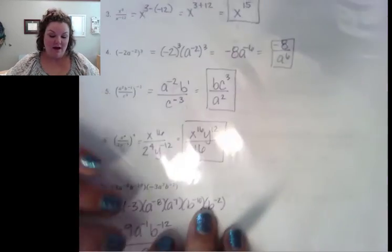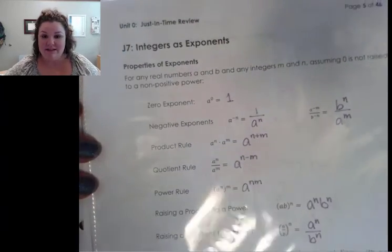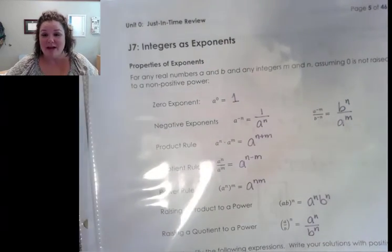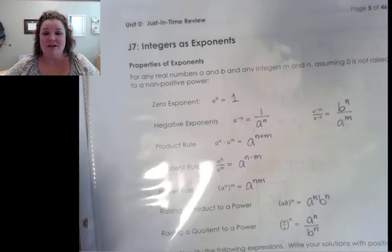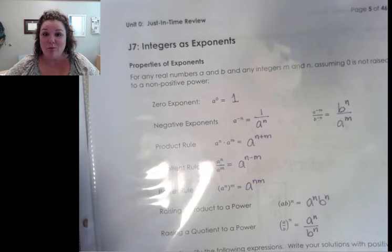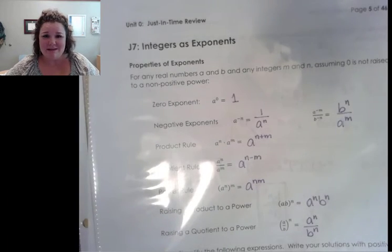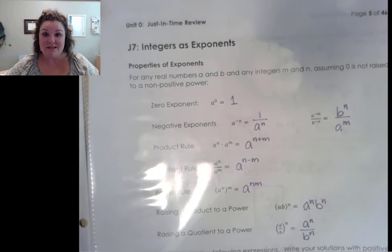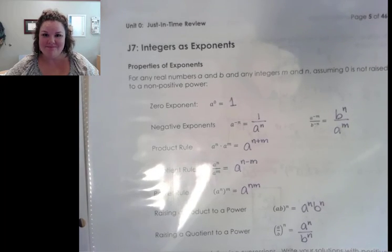That is the end of J7 — integers as exponents. You should now be able to finish that homework. If you have questions, please email me or ask me in class. Otherwise, we'll see you on the next video.